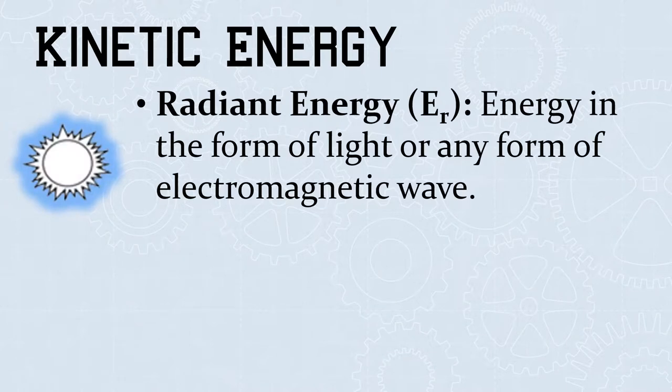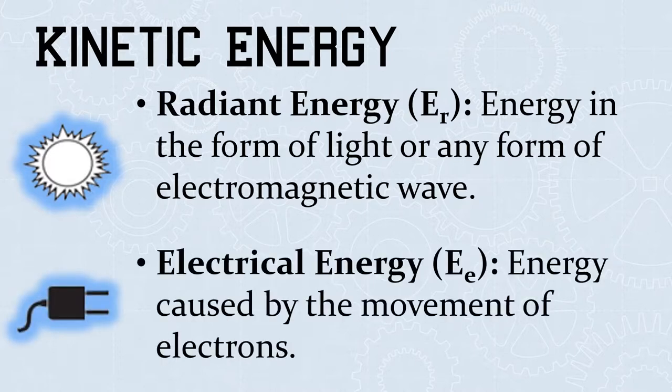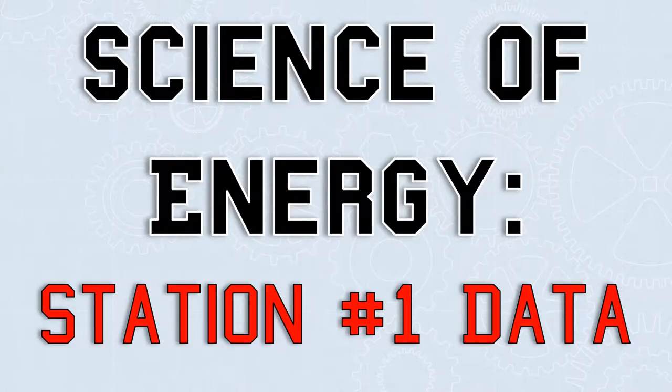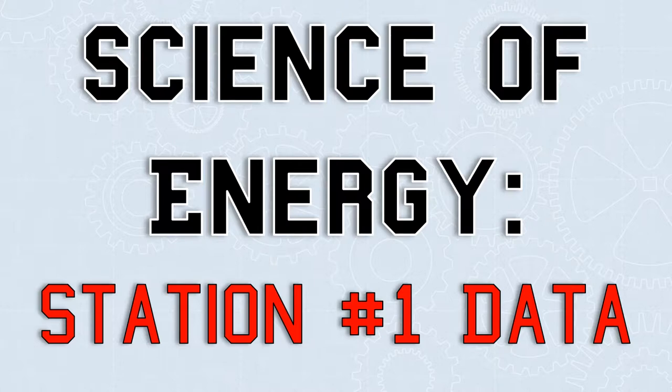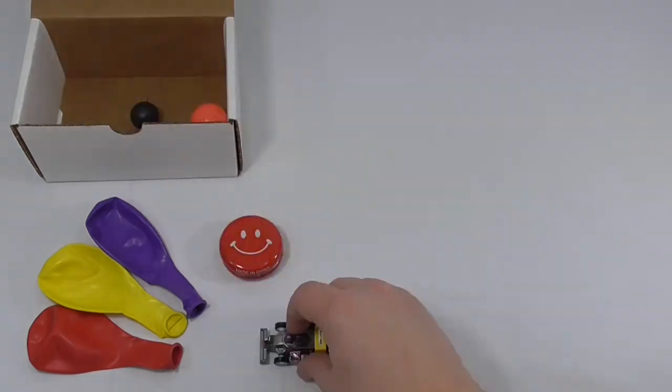Radiant energy is energy in the form of light or any form of electromagnetic wave. This even includes radio waves. Electrical energy is energy caused by the movement of electrons. This is also the form of energy that you probably use most on a daily basis. To help understand these transformations of energy, we're going to use the parts from Station 1 of the Science of Energy to collect some data.